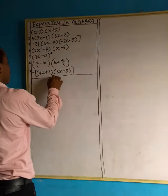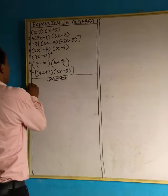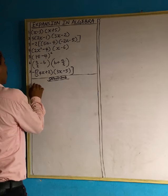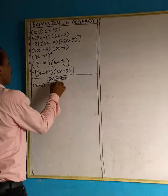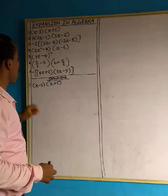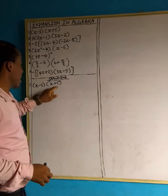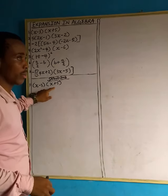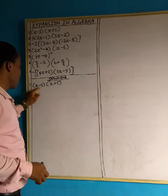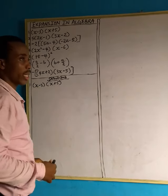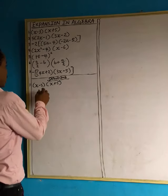The first one we have is: open bracket x minus 3 close bracket, open bracket x plus 5. We are going to take the first term here and multiply it by every term in this bracket. Then take the second term, minus 3, and multiply it by every term in this bracket. That is what expansion is all about. So let's do it.